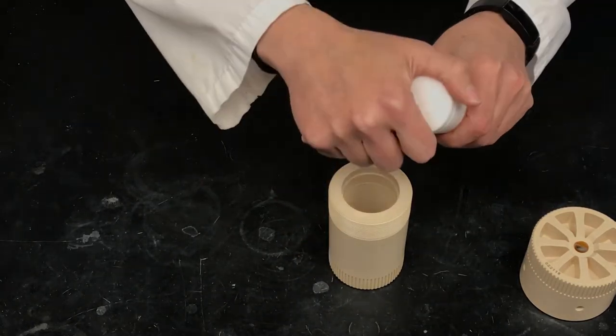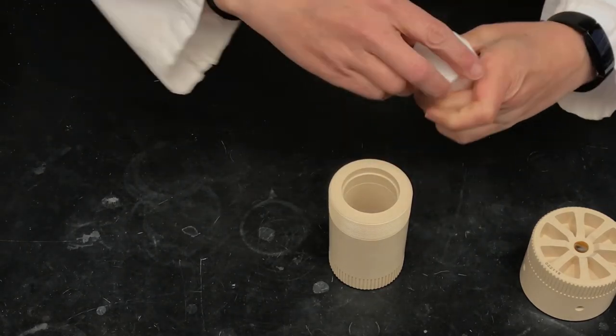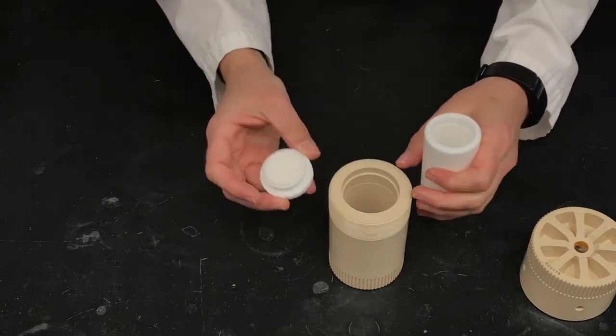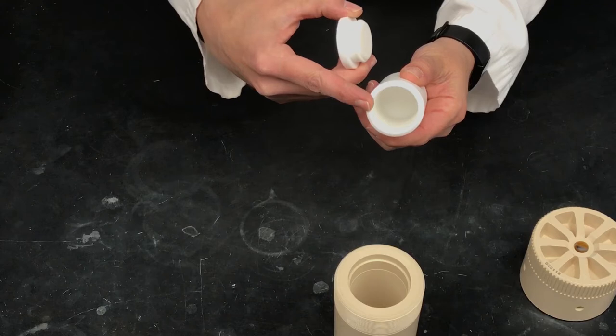And the PTFE cup opens. There's just an O-ring. Pop this open. It's a lot easier once you've heated it up. But in here is where you're going to put your soil sample.